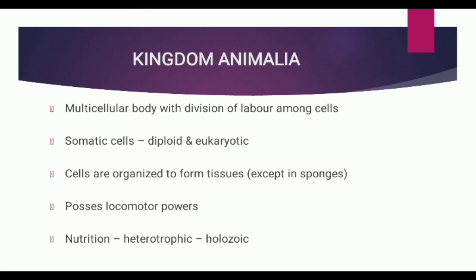The multicellular body has many types of cells with many functions — that is, a multicellular body with division of labour amongst cells. Unlike unicellular protist-like organisms, these are multicellular organisms. Somatic cells possess two sets of chromosomes (diploid), and a true nucleus is present — that is, they are eukaryotes.